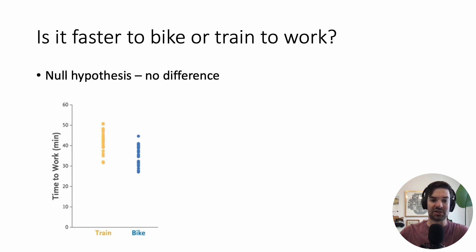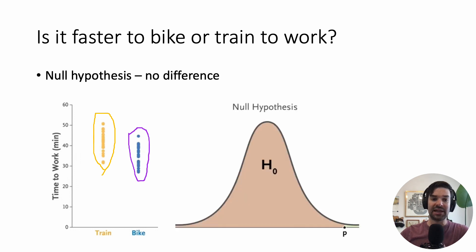And we could bike to work each day, and we could record the time it takes when you bike to work each day. And then maybe for the next month, you can take the train to work each day, and again, record how long that took. And then you want to compare the two to see are they different or not? And again, our null hypothesis is that there's no difference.